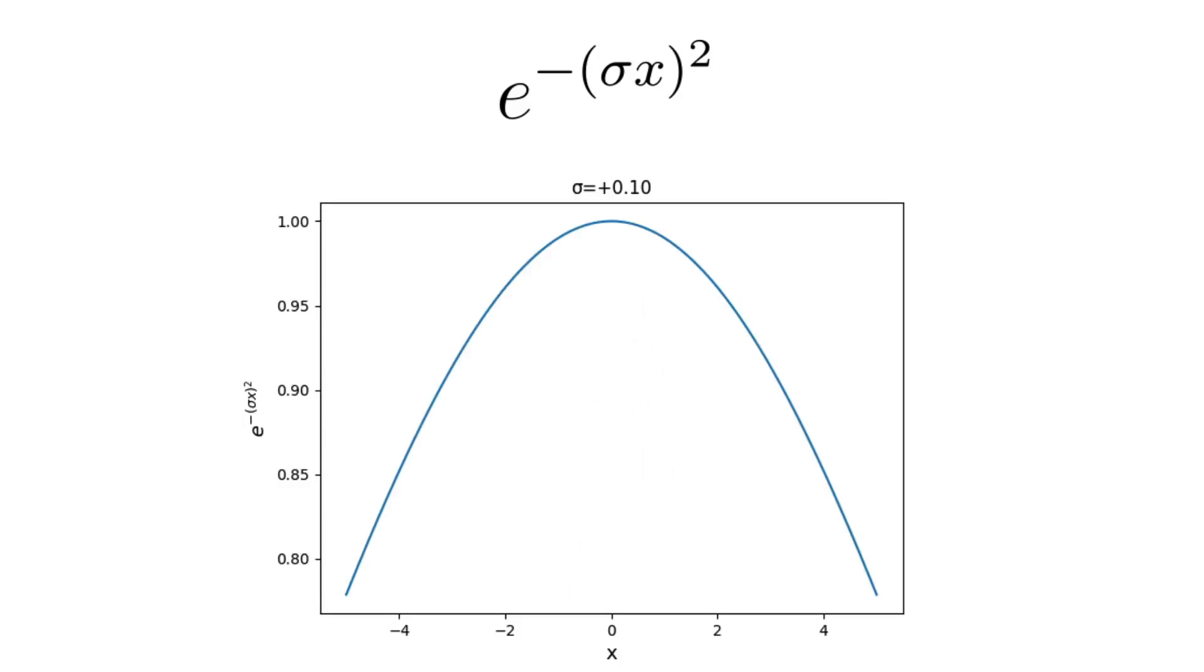In contrast, when sigma was smaller, the distribution became more narrow, indicating that the data points were clustered closer to the mean.